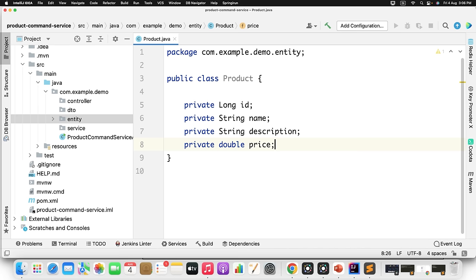The above demo is just one way of implementing CQRS. You can do it in many more ways based on your use case. For example, you can club everything in a single microservice with different controller and service classes, or use event sourcing to keep read and write data in sync. You can also use a NoSQL database instead of MySQL. There are multiple approaches you'll find online, but this recommended approach of segregating command and query makes it easy to scale, though more complex to manage. Please let me know in the comments if you have any doubts. Thanks for watching — see you soon with a new concept.